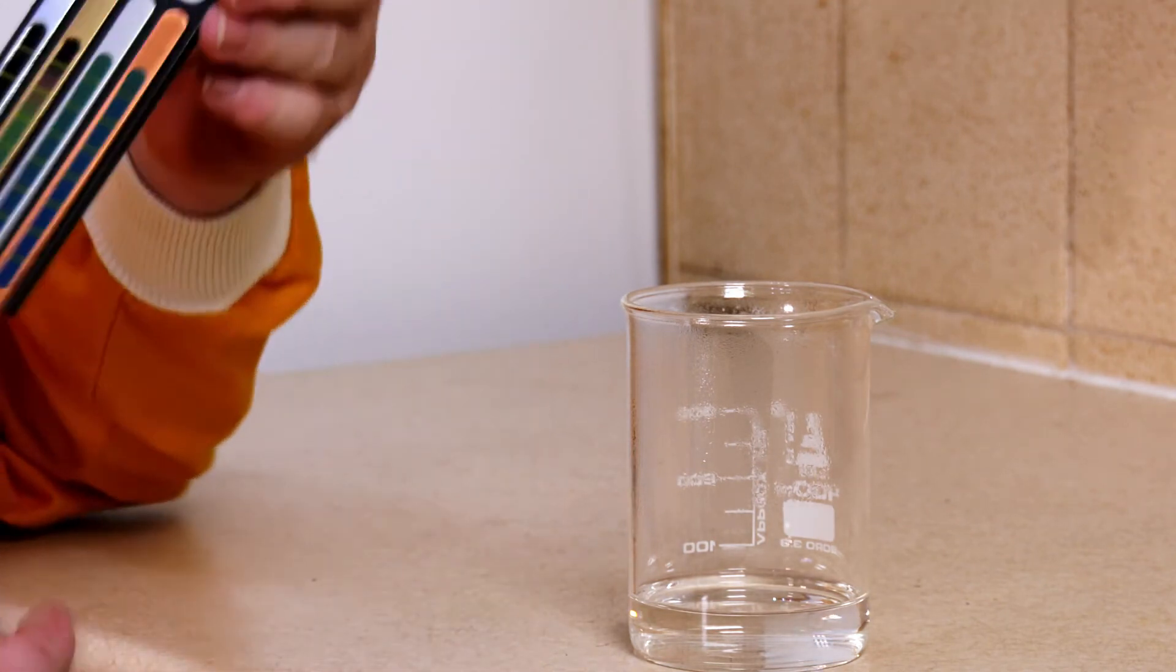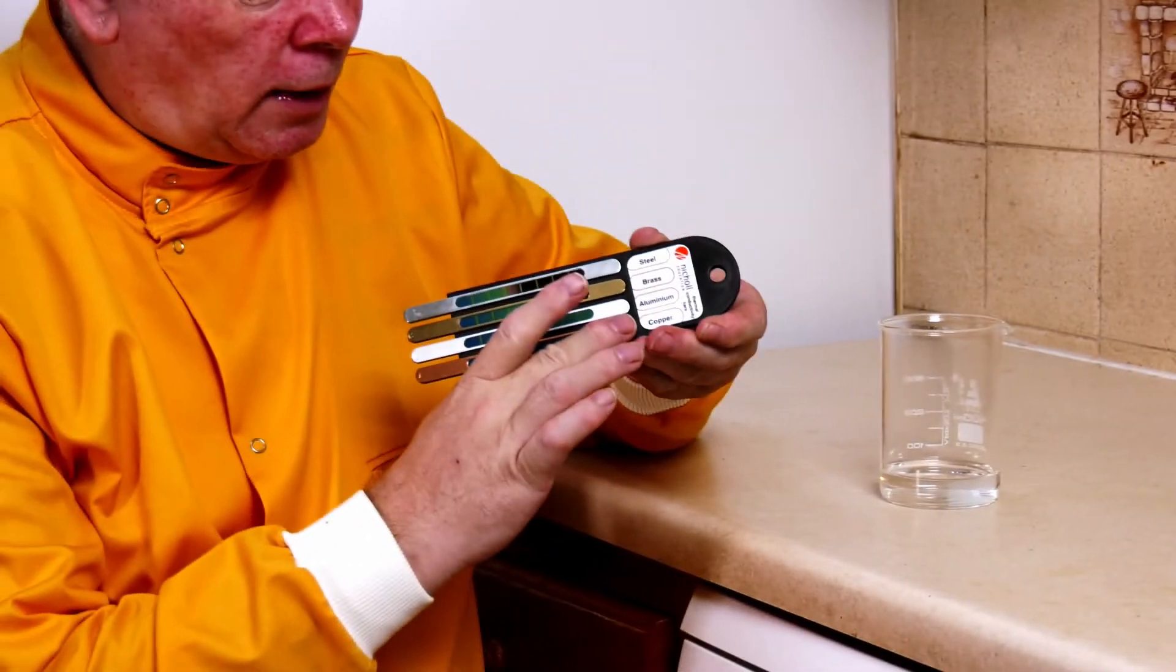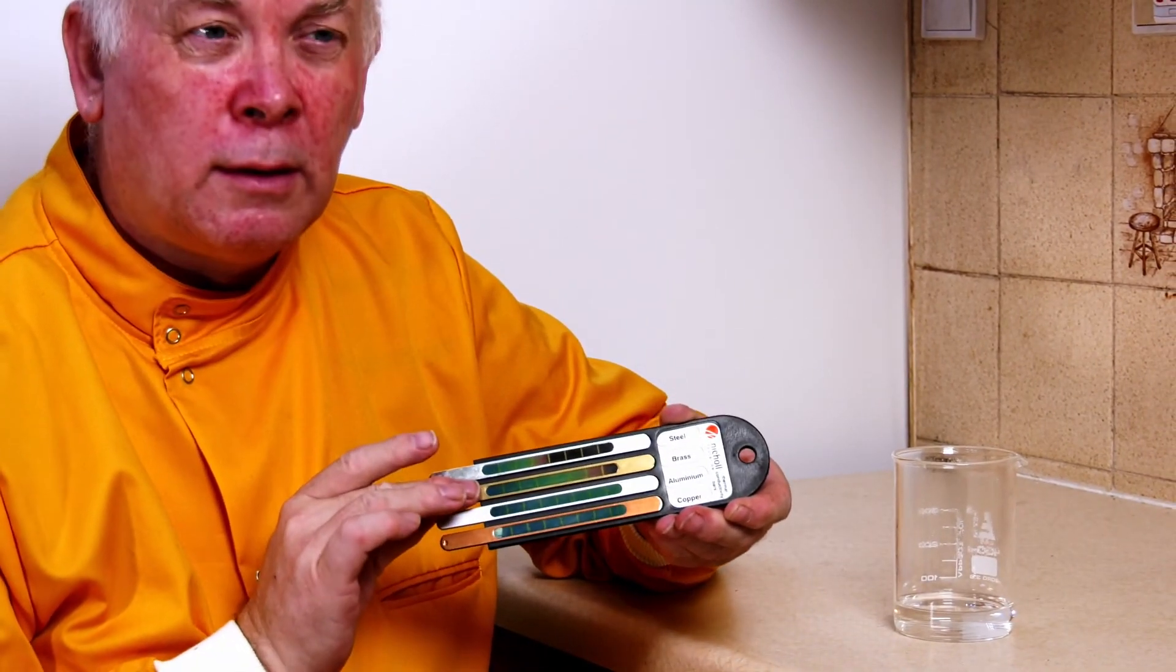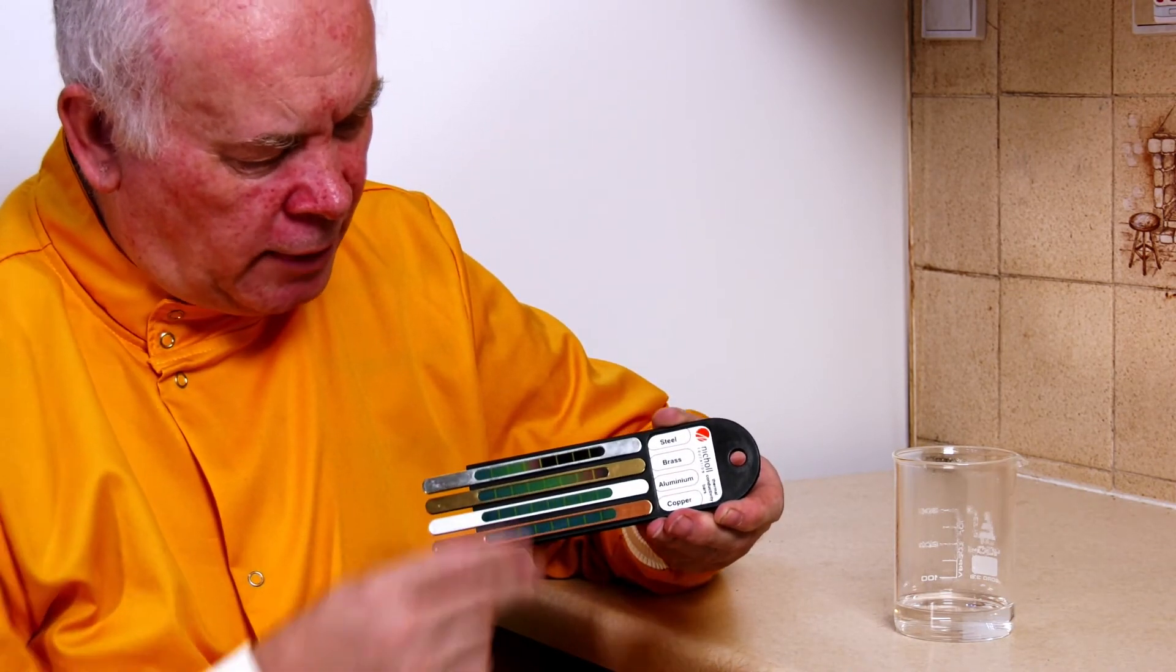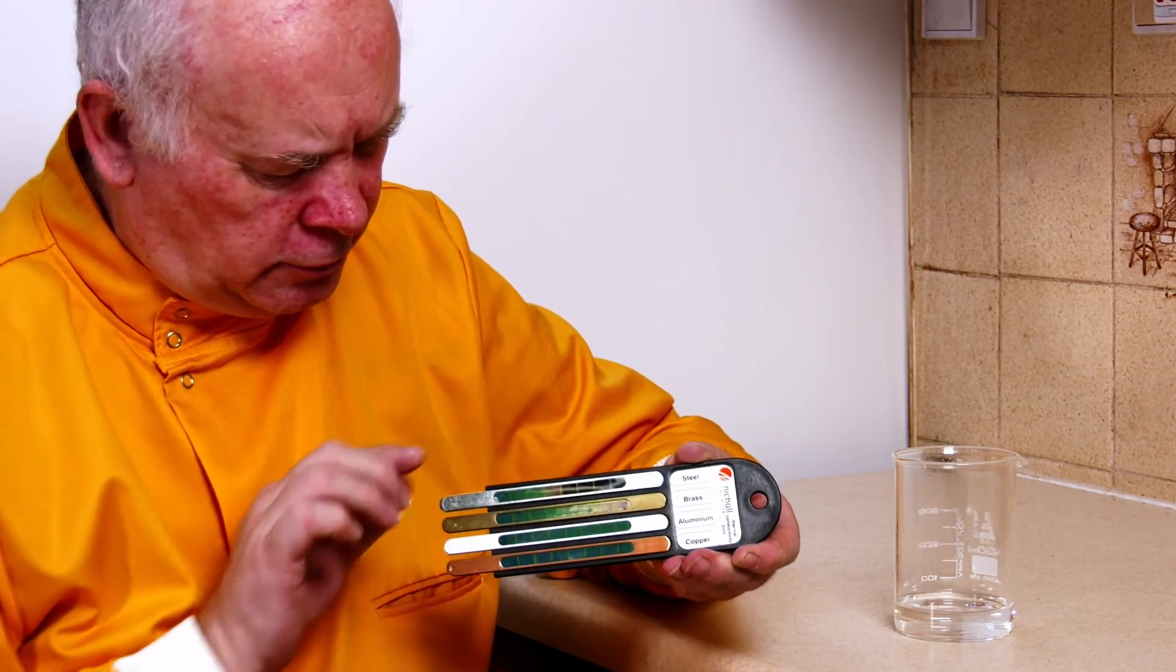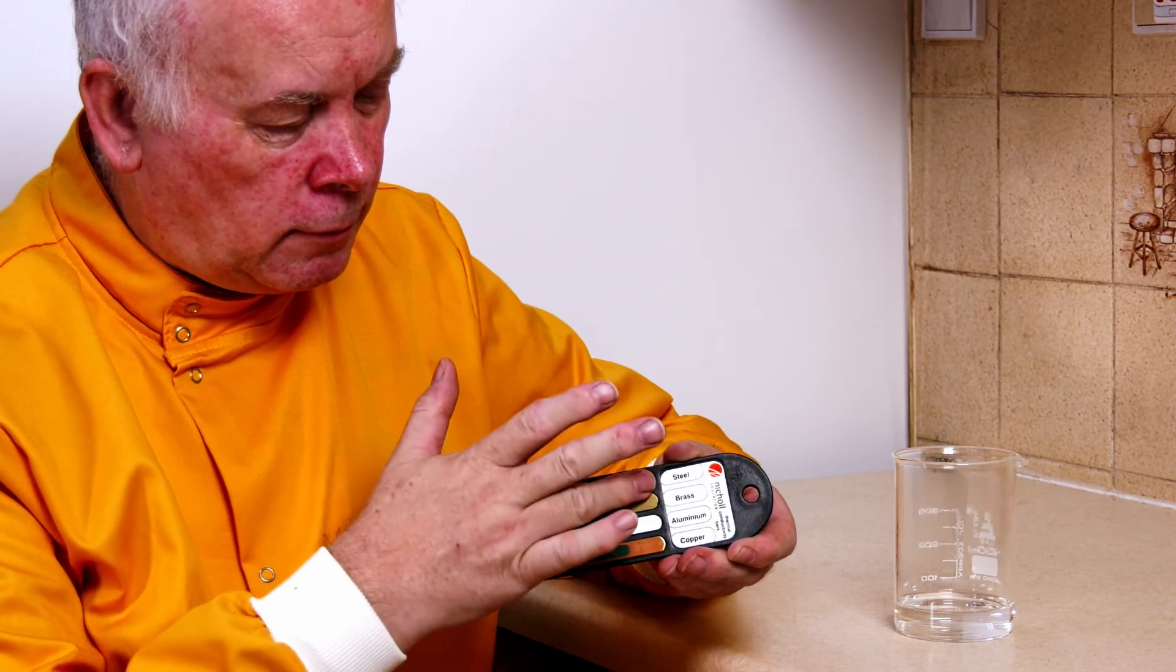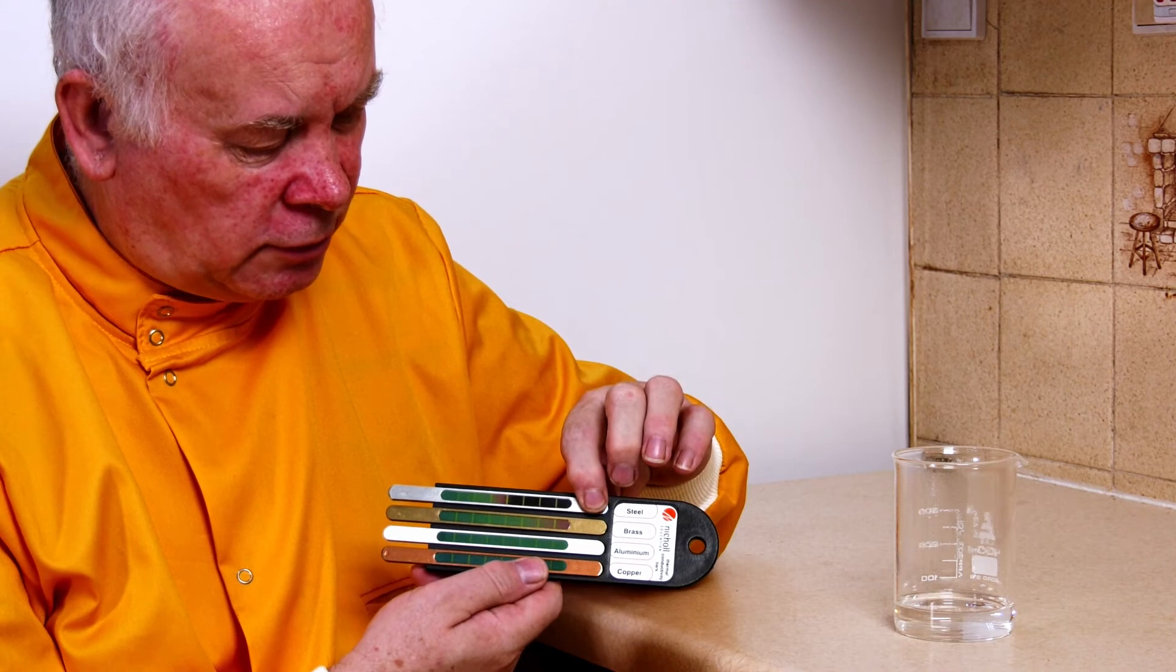If I touch this, this feels hot to the touch, as does that end. The same is true of the aluminium. The brass feels possibly a little bit warmer than the copper or aluminium, but this end still feels cold. The steel does feel the hottest of the four. And at this end, the steel doesn't feel hot at all.